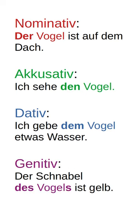And finally, in the possessive case, Genitiv, in another form. Der Schnabel des Vogels ist gelb — the bird's beak is yellow. Notice that the noun gets an 'S' at the end.